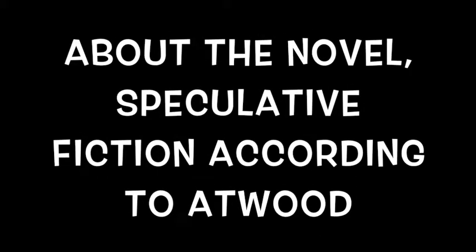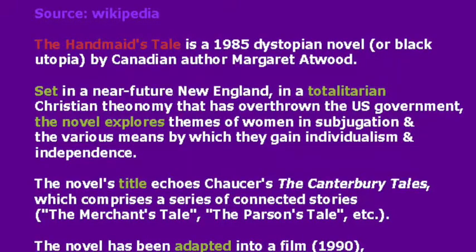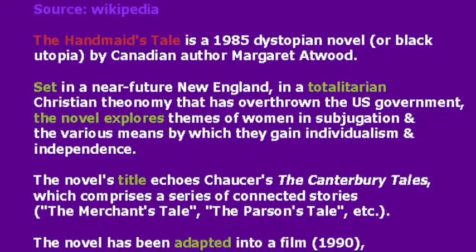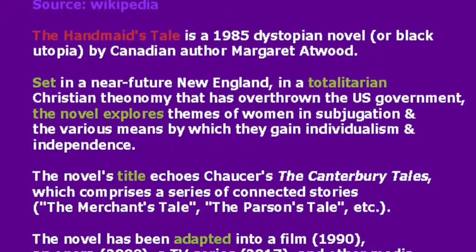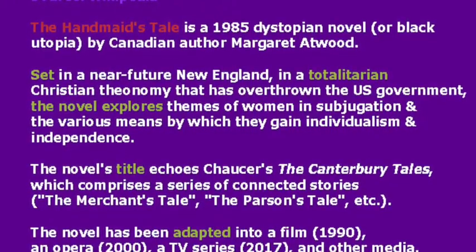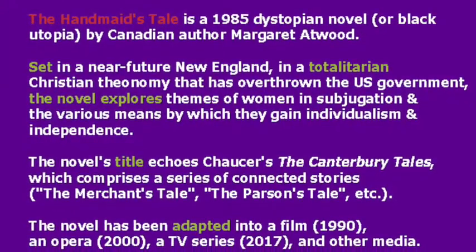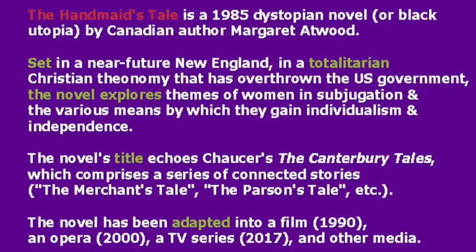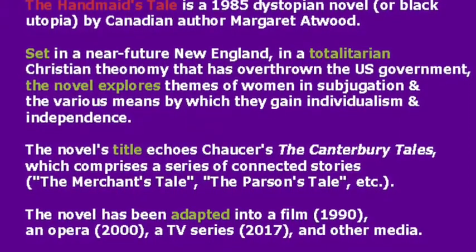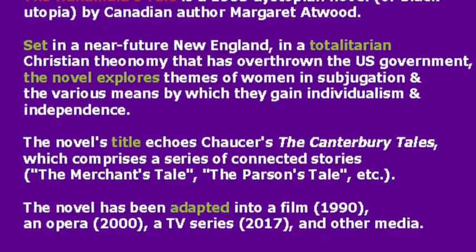About the novel — speculative fiction according to Atwood. Source: Wikipedia. The Handmaid's Tale is a 1985 dystopian novel, or Black Utopia, by Canadian author Margaret Atwood. Set in a near-future New England in a totalitarian Christian theonomy that has overthrown the US government, the novel explores themes of women in subjugation and the various means by which they gain individualism and independence. The novel's title echoes Chaucer's The Canterbury Tales, which comprises a series of connected stories, like The Merchant's Tale or The Parson's Tale.